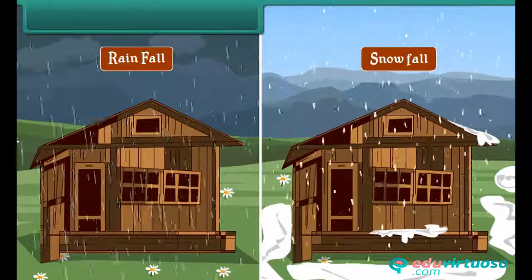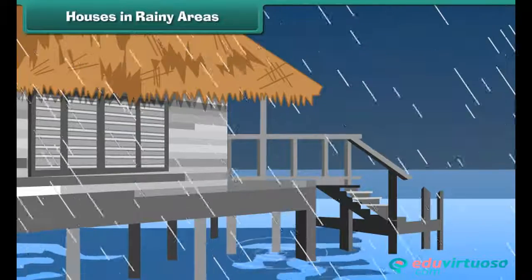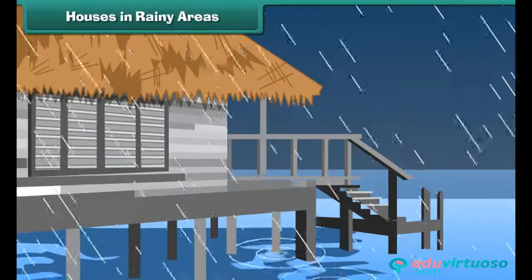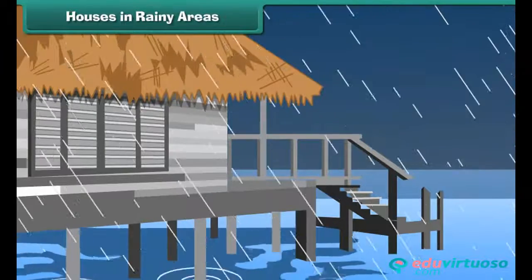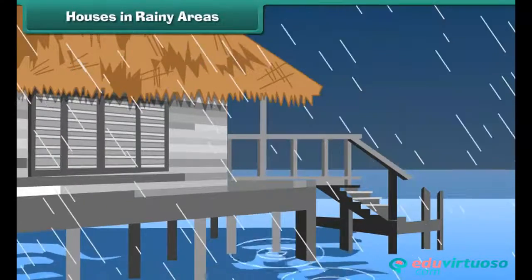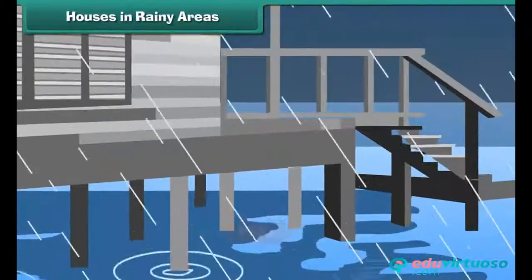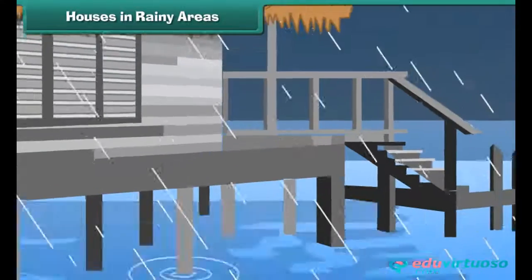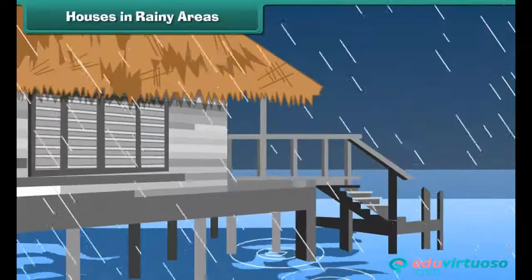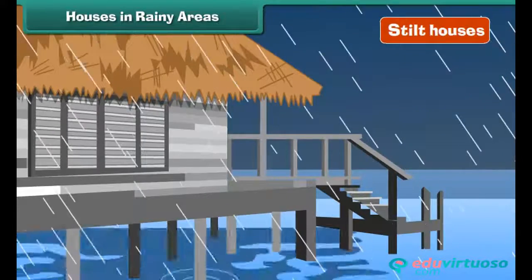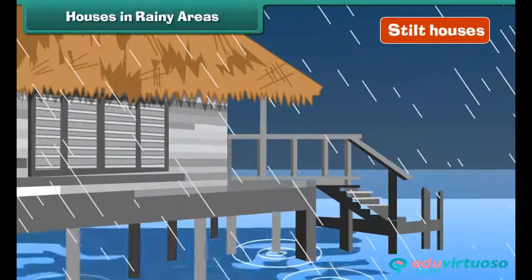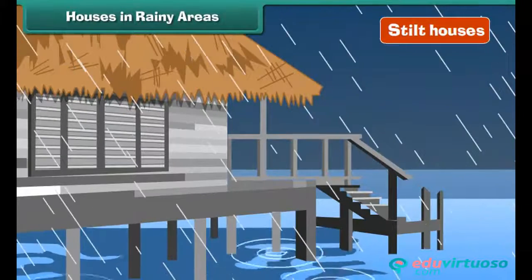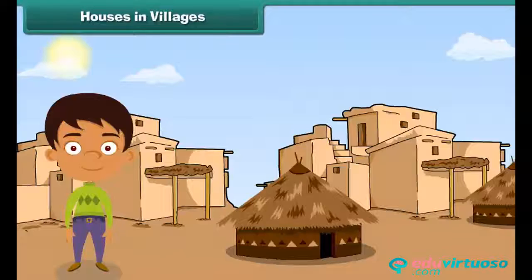In areas that receive heavy rains, houses are built at some height above the ground. These houses are supported by pillars made of bamboo, known as stilts. That is why these houses are called stilt houses. Stilt houses save people from floods, which are a regular feature in such regions.